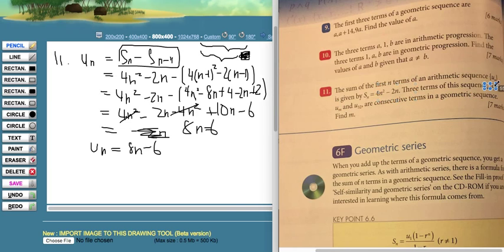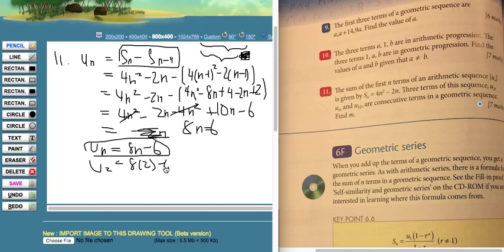So let's plug in u of 2. We're given, in the general form, un equals 8n minus 6, so 8 times 2 minus 6 equals 10. Let's do the same for u32. U equals 8 times 32 equals 256 minus 6 equals 250.